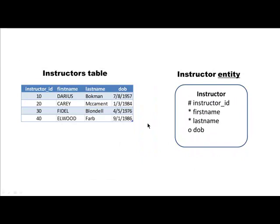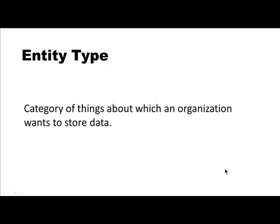Another example: in one of our examples we had a table for instructors, and the corresponding entity looks like this. The table had instructor ID as the primary key, with first name and last name as required attributes, and I've assumed that date of birth is an optional attribute.